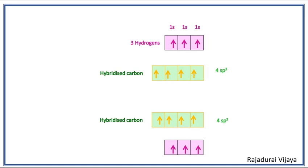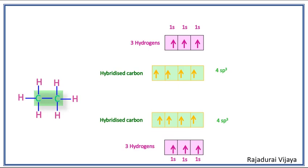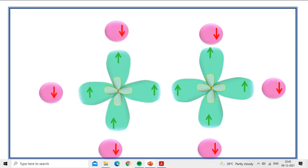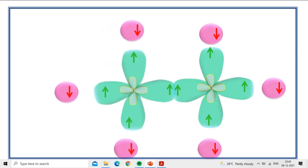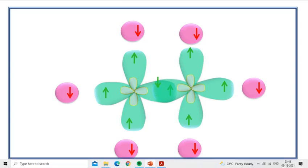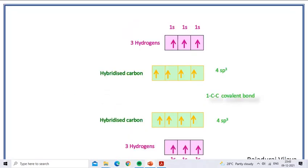For the ethane molecule, one sp3 hybridized orbital of one carbon atom overlaps with another sp3 hybridized orbital of the second carbon atom, following the Pauli exclusion principle, forming the C-C bond.